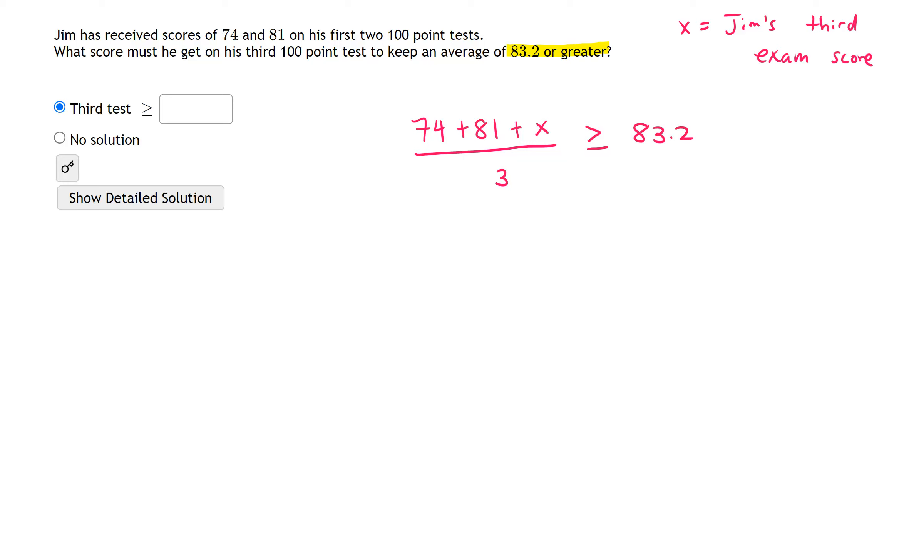Now, what do we do from here? We're trying to solve this inequality for x, so I'm going to multiply both sides by 3. The reason I'm doing that is so the 3 in the denominator on the left-hand side will disappear.